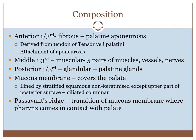The anterior one-third is fibrous, middle one-third is muscular, and posterior one-third is glandular. The mucous membrane covering the palate: the oral side is lined by stratified squamous non-keratinized epithelium, while the posterior aspect facing the nasopharynx is lined by ciliated columnar epithelium. Passavant's ridge marks the junction of squamous and columnar epithelium, where the palate comes in contact with the pharynx.